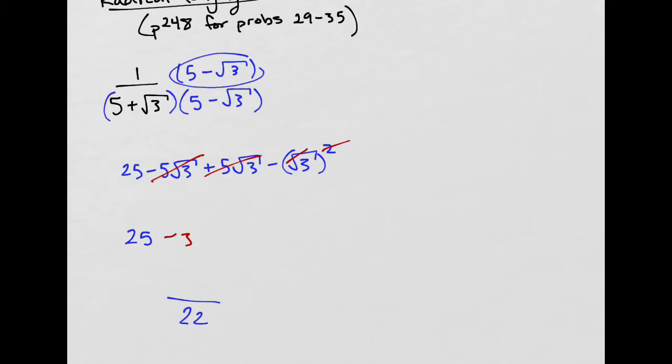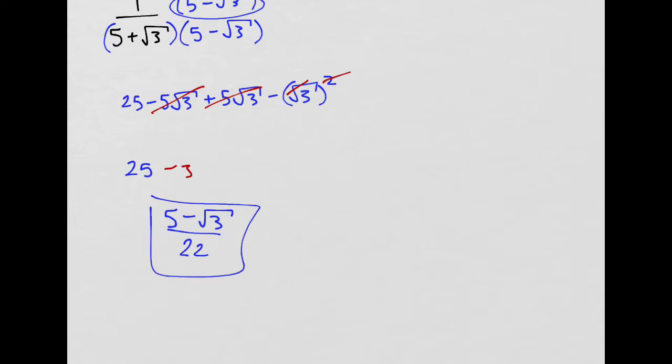And in the top, well, 1 times that is just that. And so all I have is 5 minus square root of 3 over 22.